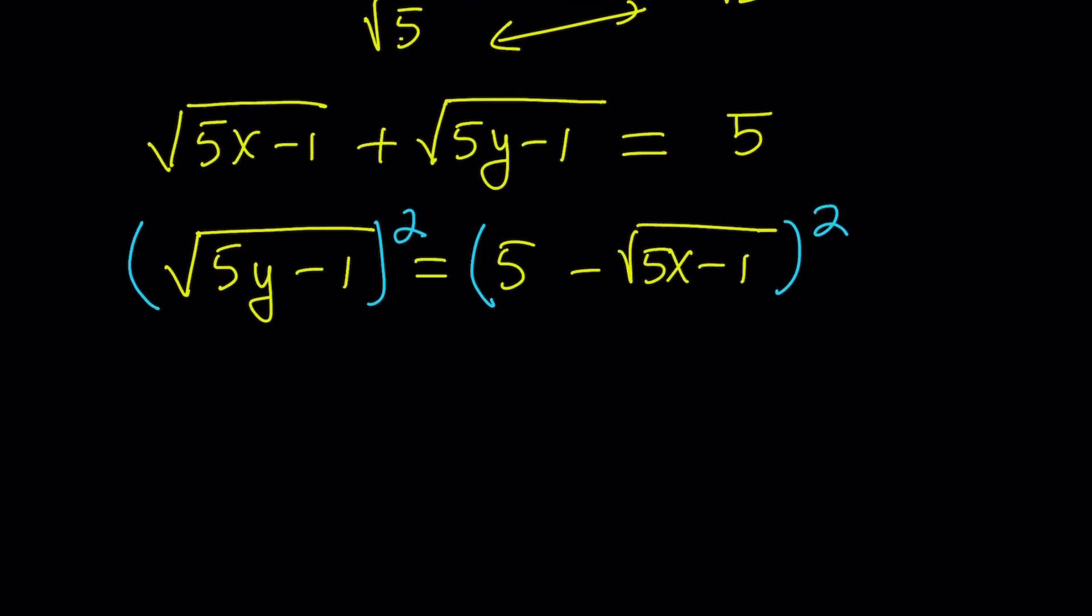If you square both sides, you get 5y minus 1 equals. Now, this is a difference. So to be able to square it, we have to use a formula, which is the square of a binomial, a minus b squared. That is a squared plus b squared, which is how I use it usually, minus 2ab, which is 10 times the square root of 5x minus 1.